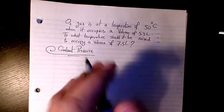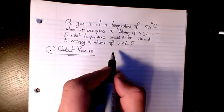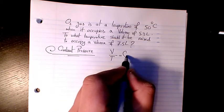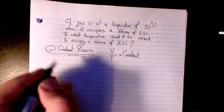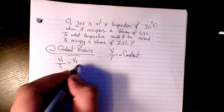So at constant pressure, we have this relationship between volume and temperature. We can say V divided by T equals a constant number, so it means that V1 divided by T1 equals V2 divided by